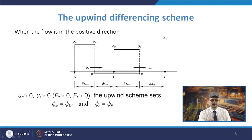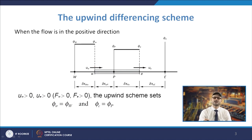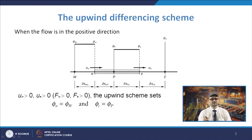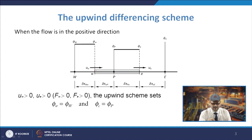If you have flow in the positive direction, you have velocity u_w at the west face and u_e at the east face. The upwind differencing scheme — also known as the donor cell differencing scheme — takes into account the effect of flow direction when finding the cell face value. The convected value at the west face is taken equal to the upstream node value.